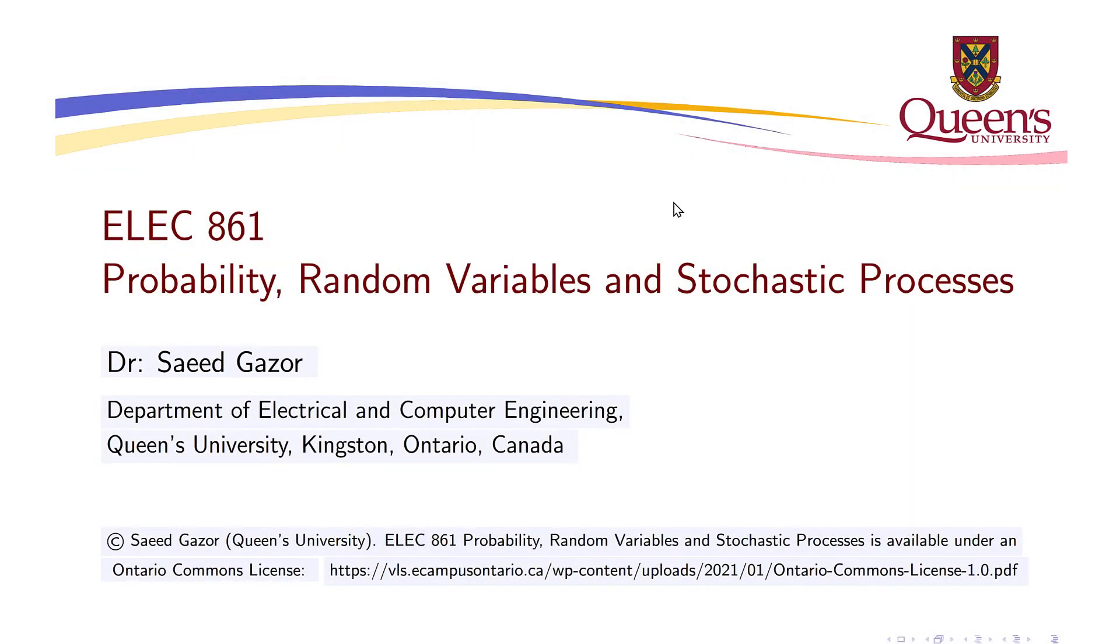The second important example here is white noise. White noise is a random process where its autocorrelation function is a delta function. So in the time domain, you have Rxx(τ) equal to 0 everywhere, and at τ equals 0 you